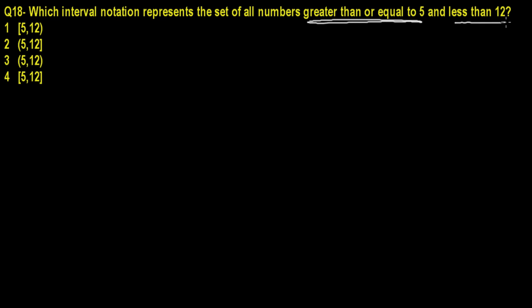First thing I'm telling you: if you get this square bracket notation anywhere, it means you have to include that value. And if you get a bracket like this parenthesis, it means exclude that value.